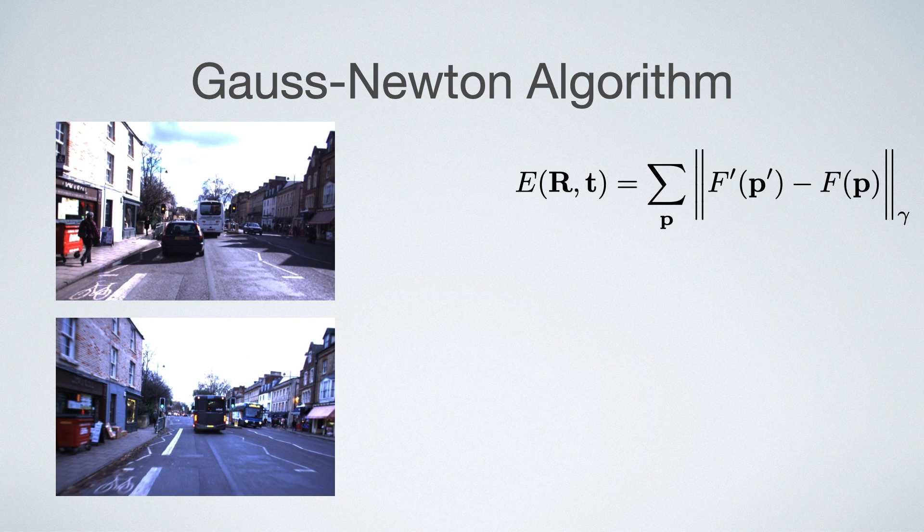To explain our loss formulation, we have to first take a closer look at how direct image alignment works. And we start with the classical Gauss-Newton algorithm.